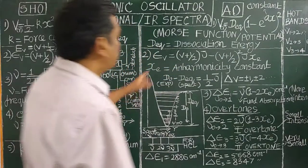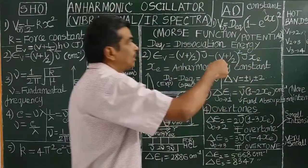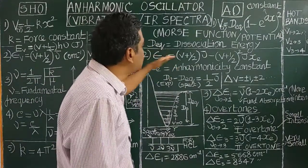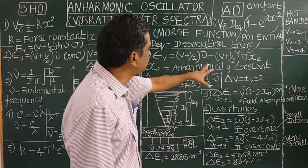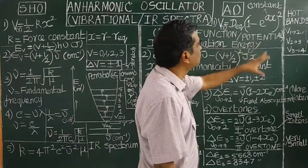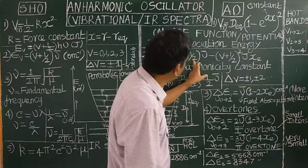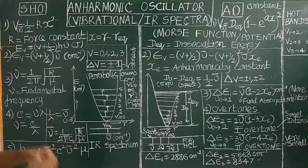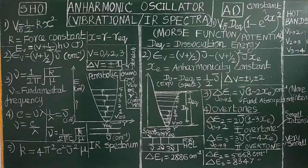By using this Morse potential energy in the Schrödinger wave equation, the Schrödinger wave equation is solved to get the vibration energy levels for the anharmonic oscillator. This is the vibration energy expression obtained using the Morse function — Morse potential. The energy is (V + 1/2)ν̃ minus (V + 1/2)² ν̃·Xe, where ν̃ is the fundamental wave number and Xe is called the anharmonicity constant.